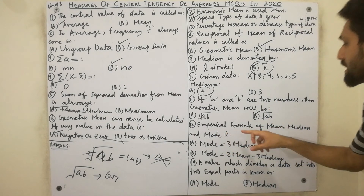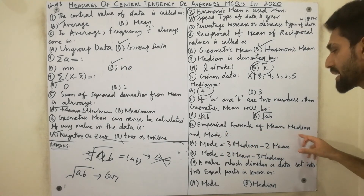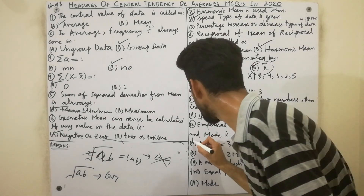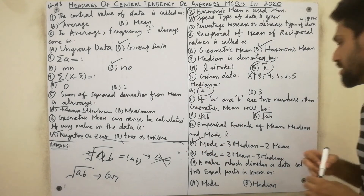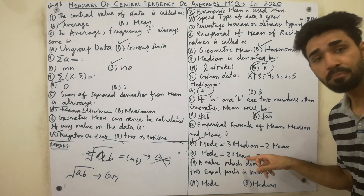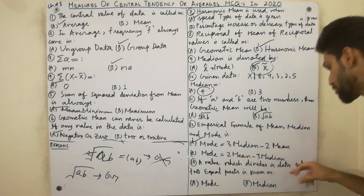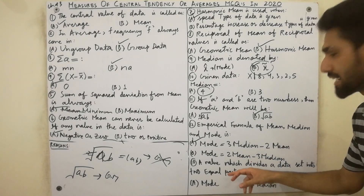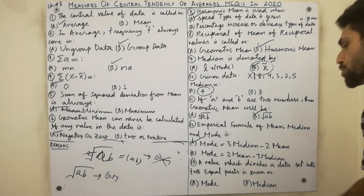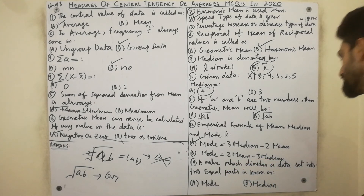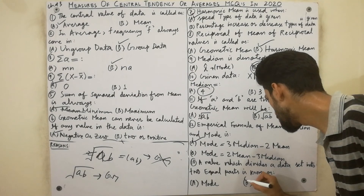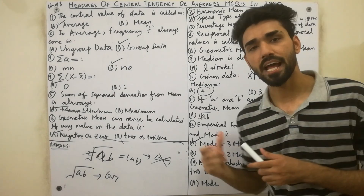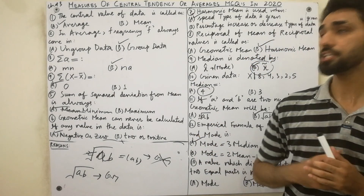The empirical formula relating mean, median, and mode is: Mode = 3 Median − 2 Mean. Also remember: the value that divides data into two equal parts is called the median.